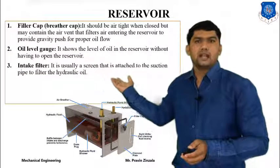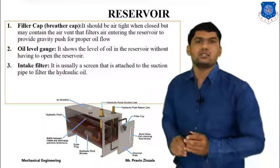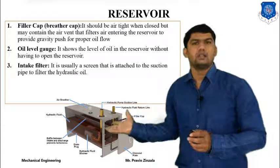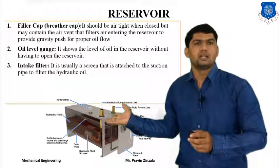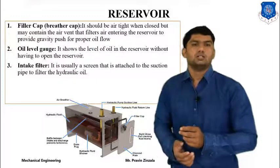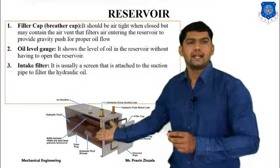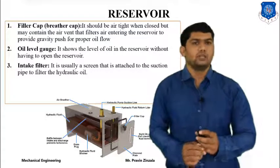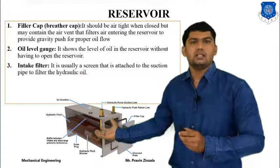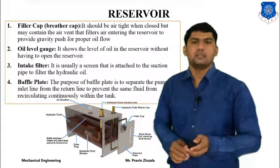The third component is the inlet filter or strainer. It is mainly used as a screen attached to the suction pipe to filter the hydraulic oil. It is used to remove contaminants before they pass through the system, providing protection for the system. In a previous lecture, we discussed what a filter is, its functions, and different locations of filters. This strainer or inlet filter prevents contaminants from entering the system.